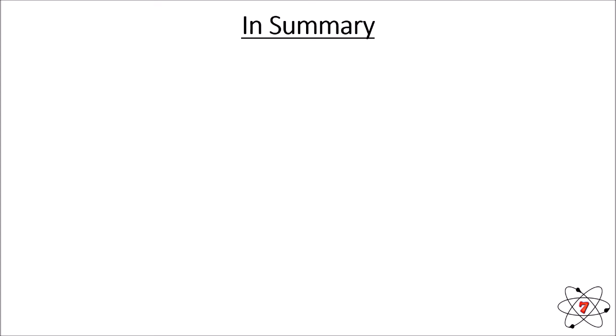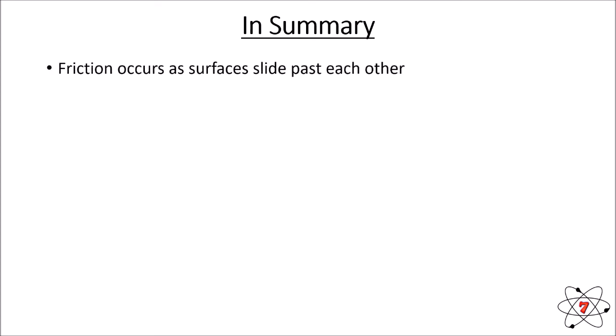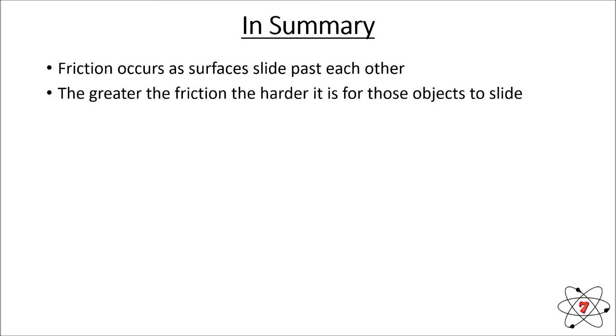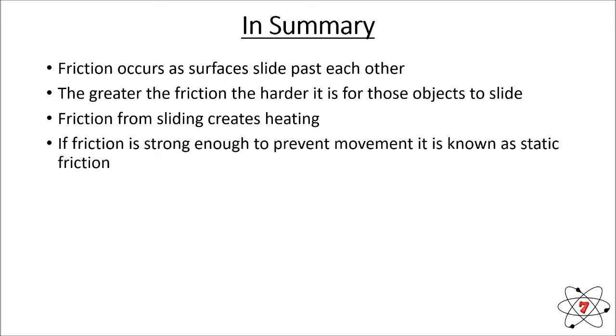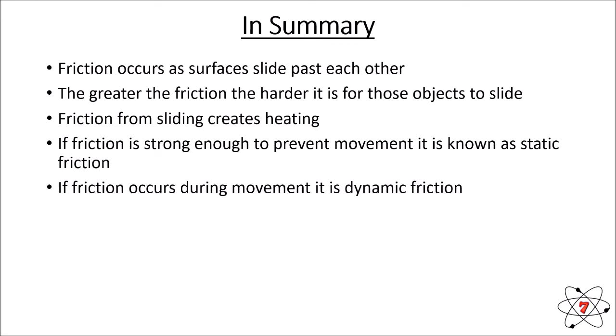In summary: friction occurs as surfaces slide past each other, and the greater the friction the harder it is for those objects to slide past each other. Friction from sliding causes heating. If friction is strong enough to prevent movement we call it static friction; if there is movement of objects when friction is applied, we call this dynamic friction.